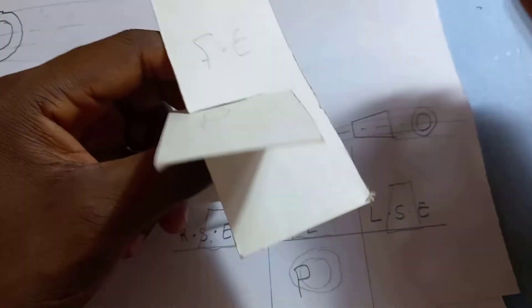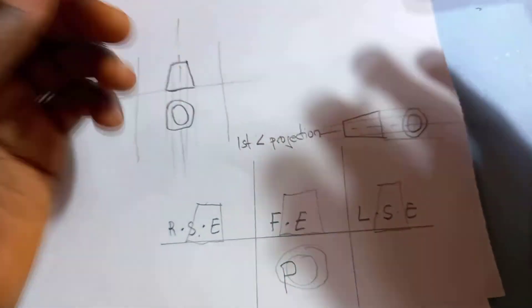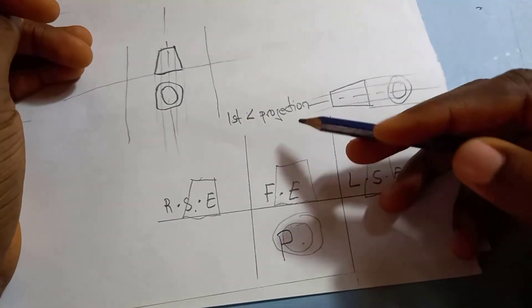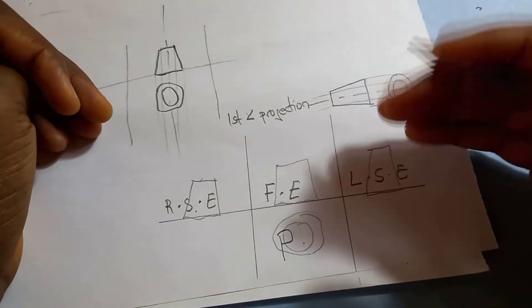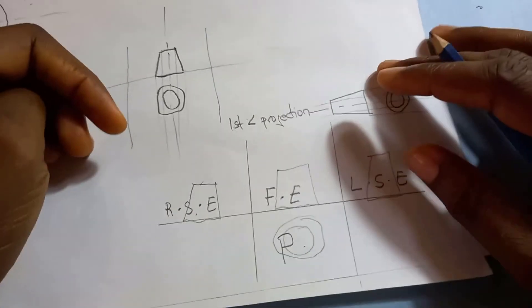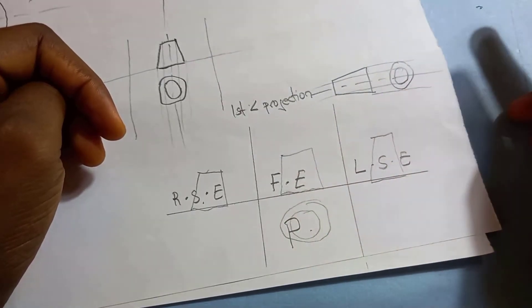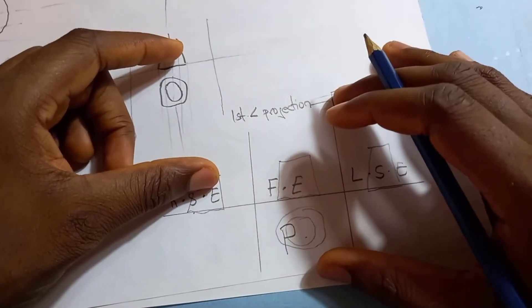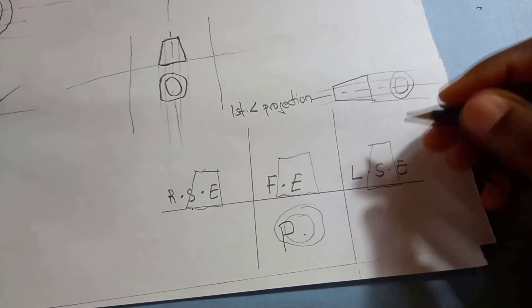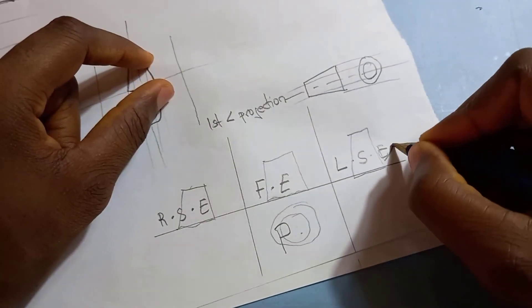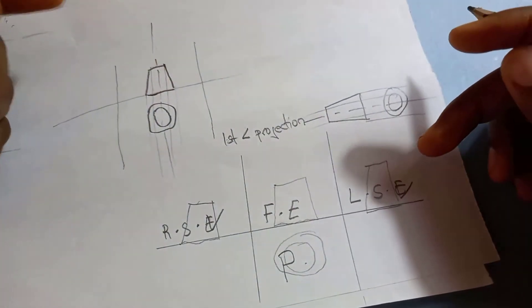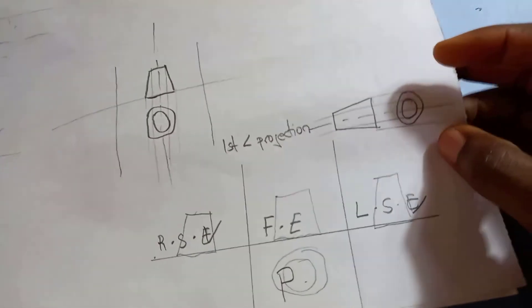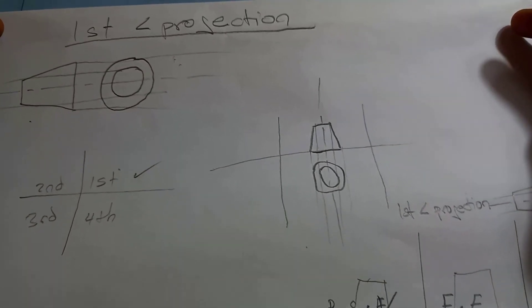That's basically why first angle projection is like this. Always remember: for first angle projection, you have the front elevation at the top in the middle, the plan on the bottom, the right side view of your object on the left side of your paper, and the left side view on the right side of your paper. I hope you finally understood why first angle projection is how it is. Thank you.